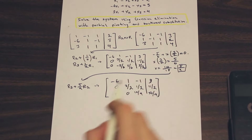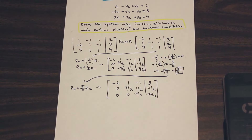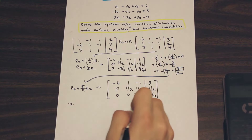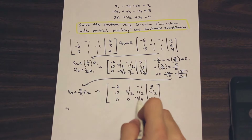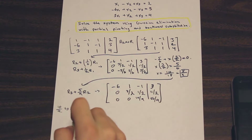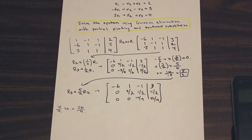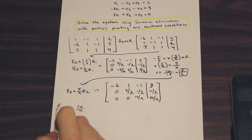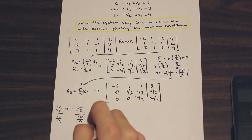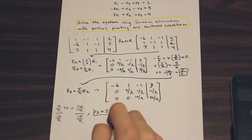Now we can perform backward substitution to solve the system. We look for the final row, which has only one variable we can solve for — x3. The coefficient of x3 in that row is 10 over 9, and the right-hand side is 50 over 9. So 10 over 9 times x3 equals 50 over 9. Dividing both sides by 10 over 9, x3 equals 5.